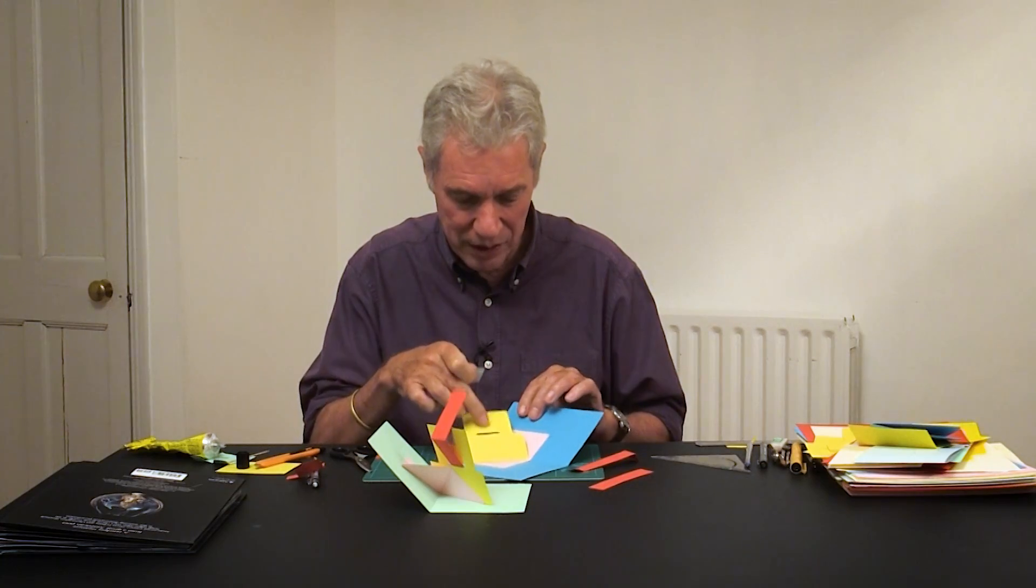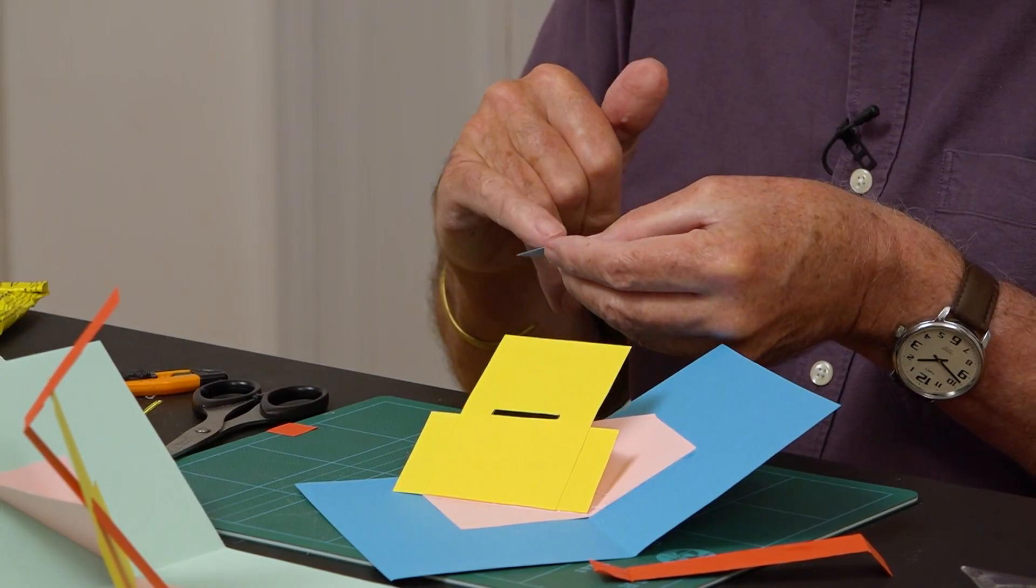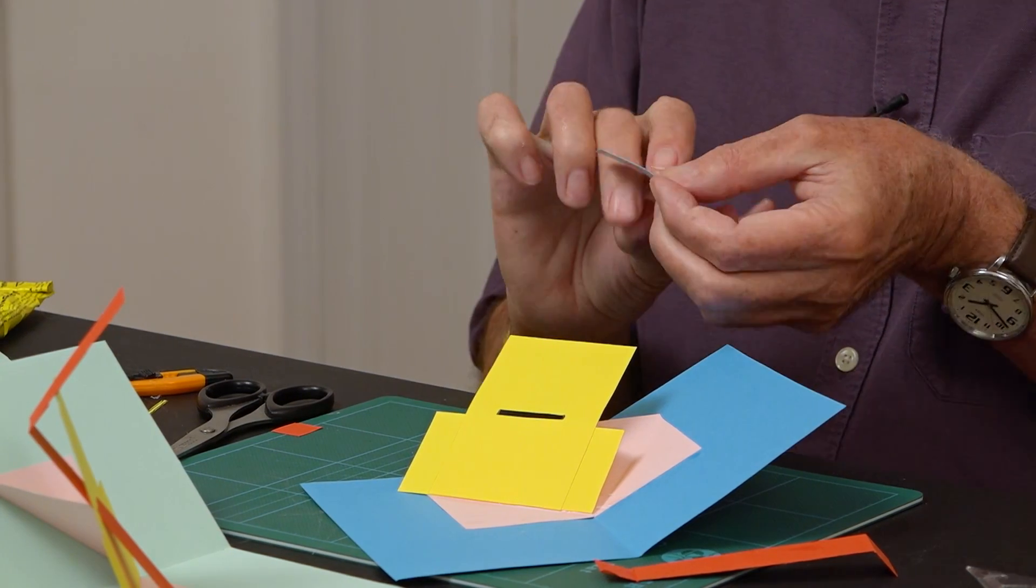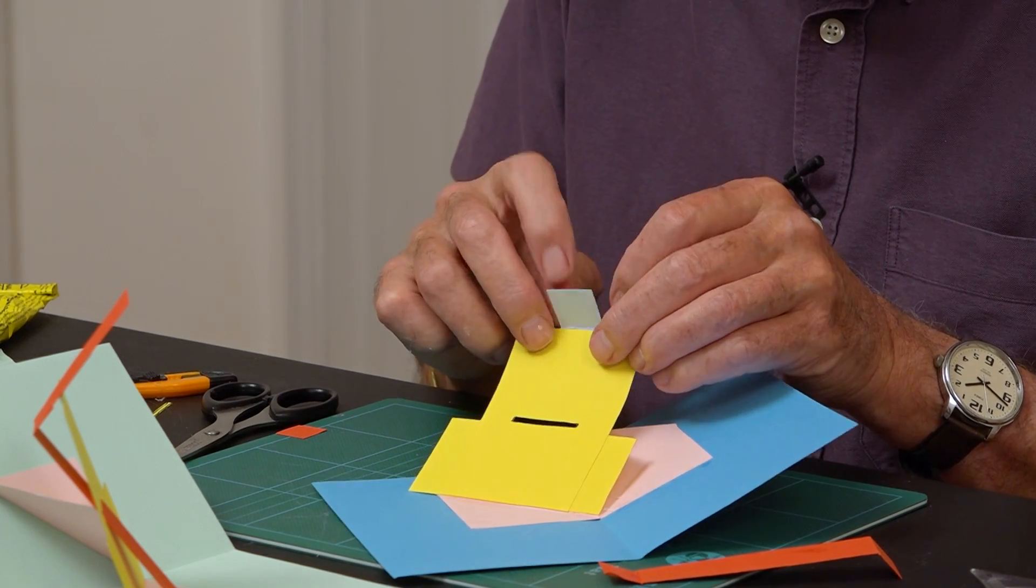So this is the hinge. It's just a small piece with a fold in the middle. It needs to be lined up with the slot. Put a bit of glue on that. And that's going to go there.